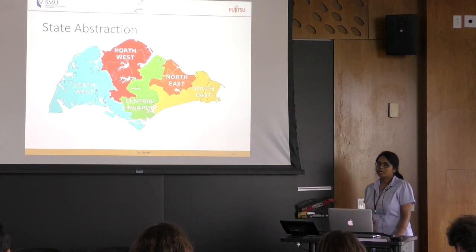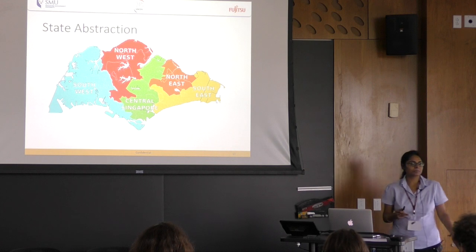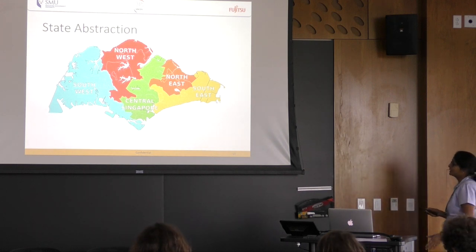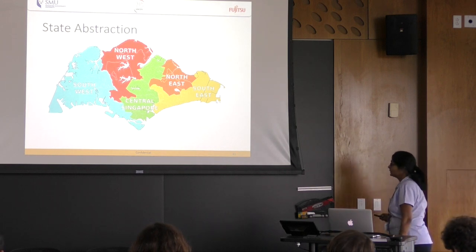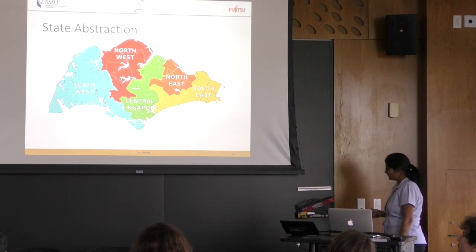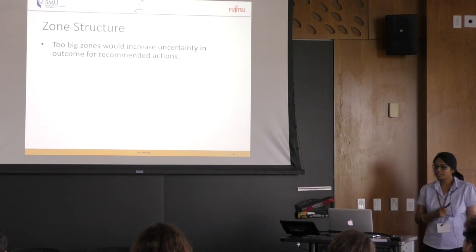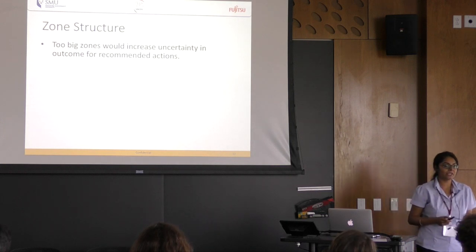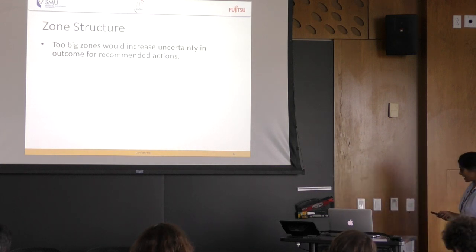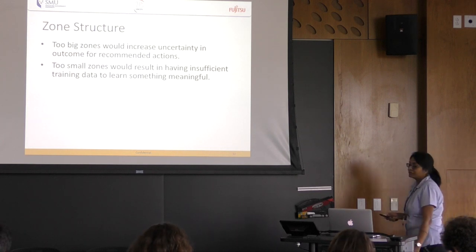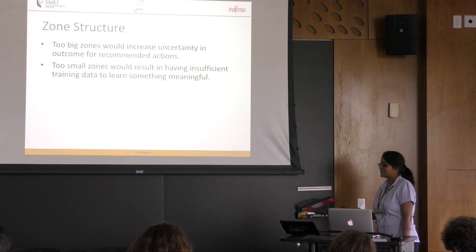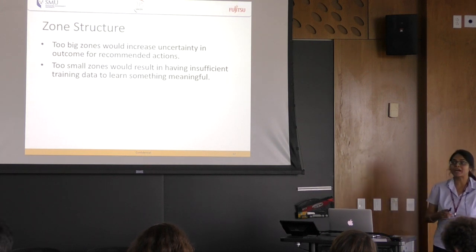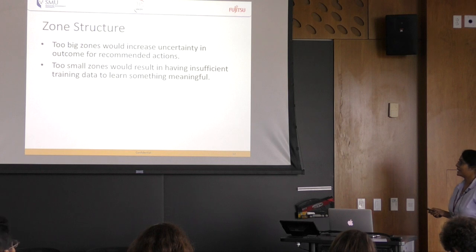We know that our state space would affect our learning. Is it sufficient to have a few large zones, or do we need more granular zones? If zones are too big, it increases uncertainty in the outcome of recommended actions. But if zones are too small, we won't have sufficient data to learn something meaningful. So we need to maintain a balance between uncertainty and granularity.